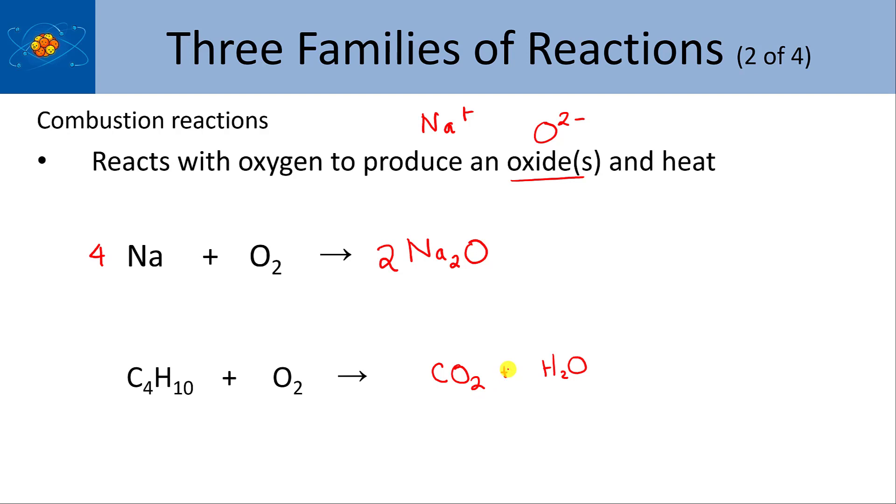It turns out, for hydrocarbons or hydrocarbon-type compounds containing oxygen, these always produce the same two products and heat. So, for example, paper is actually made of cellulose, and cellulose is actually a polymer of C6H12O6. It's a polymer of glucose, which is the sugar that your brain operates on, really.